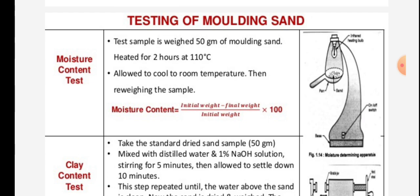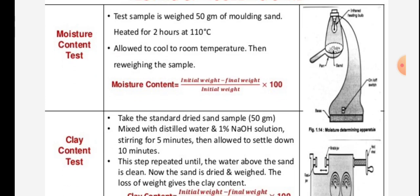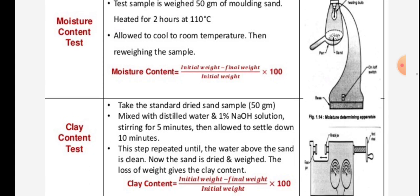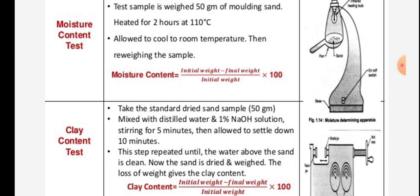First of all, we will see the moisture content test. In this test, a sample of 50 grams of molding sand is heated for 2 hours at 110 degrees Celsius, then allowed to cool to room temperature, and we weigh the sample. Moisture content is equal to initial weight minus final weight, upon initial weight, into 100.